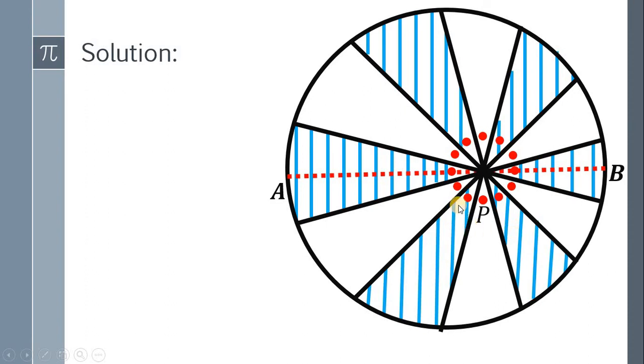To find the area of the circle, we have the formula π r². We need the value of r. From the given information, we know that the radius r equals 4 centimeters.